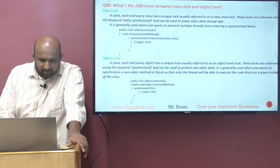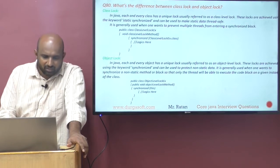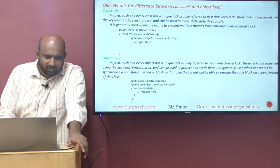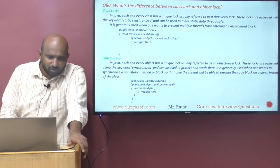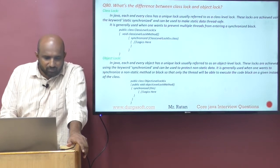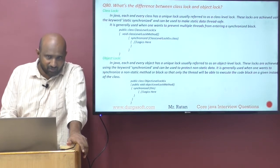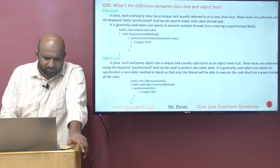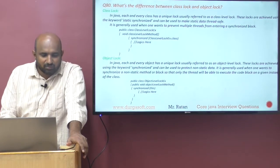At the static methods level, you go for the class level lock. Class level lock means the argument should be the class dot class file. Object level lock means at the instance level, the argument should be `this`.